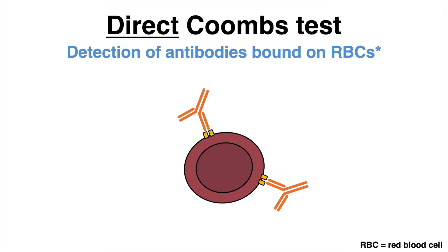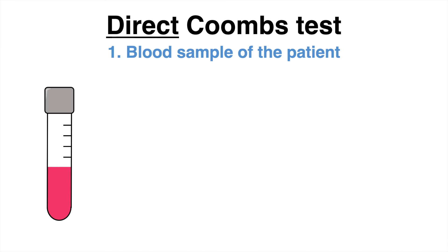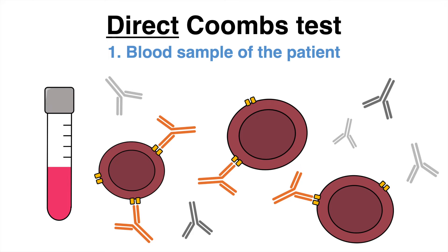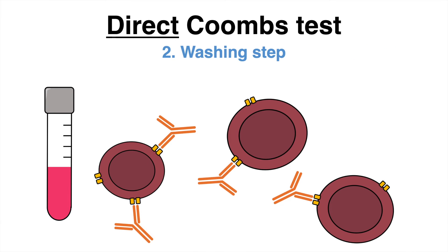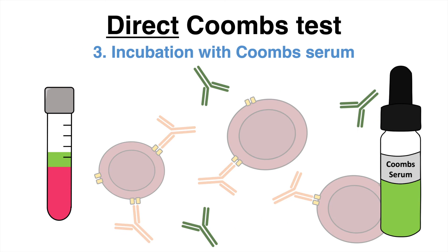In the direct Coombs test, IgG antibodies are detected which bind to the surface of erythrocytes. In the first step, a blood sample of a patient is taken. The sample is washed in saline to remove unbound antibodies and isolate the erythrocytes.